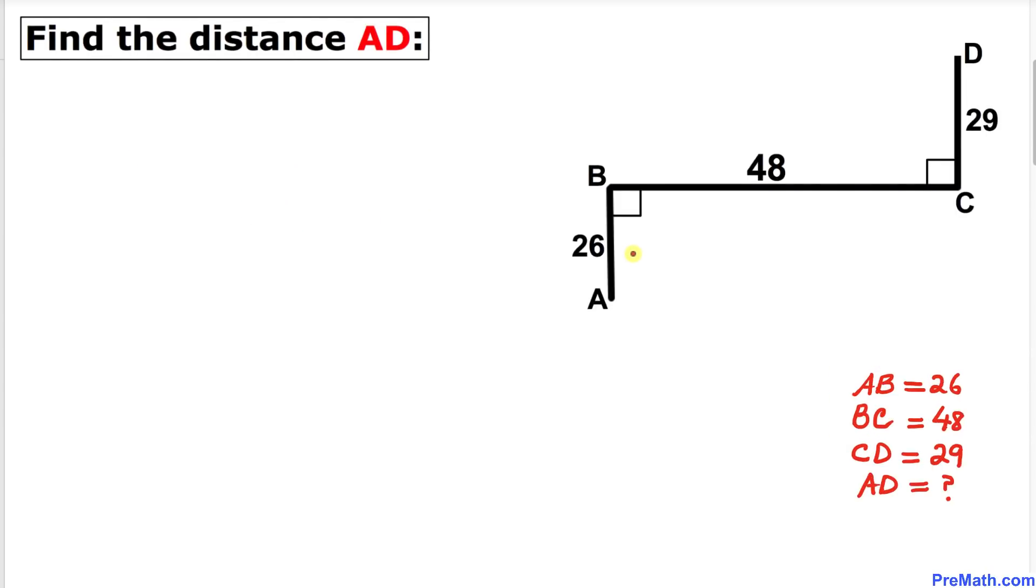Here's our very first step. Let's go ahead and draw some auxiliary lines CE and AE such that AB is parallel to CE and BC is parallel to AE. Let's suppose that we have a point E somewhere here, so let's connect point C and E.